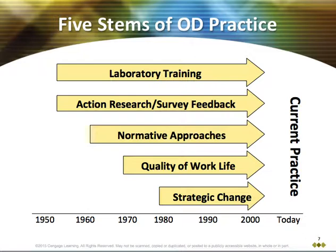Quality of work life, or QWL, was first defined in terms of people's reaction to work, especially job satisfaction and mental health. A second definition defined QWL as an approach to job enrichment. Lastly, strategic change involves improving the alignment among an organization's design, strategy, and environment.